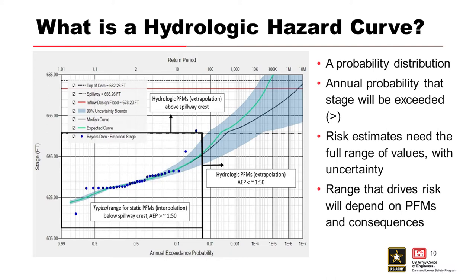The blue solid circles are the annual maximum series of the observed data — the peak stages for each year this reservoir has been in operation. The blue shaded area is the 90% confidence interval; the wider it is, the more uncertain we are in that area, and the tighter it is, the more confidence we have. There's a black curve for our median and a green curve for our mean or expected curve — and the green one is what we use to estimate risk. If ever given the choice between median and mean, you always want to pick mean for risk assessment.